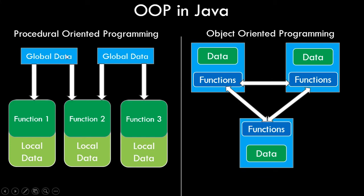In the procedural part, we have global data accessible by functions 1, 2, and 3. Function 2 can access both global data 1 and 2. In the object oriented part, you can see the square blue boxes — each box has its own data and functions. Communication happens via the functions, as shown by the arrows. This represents that data for each class is only accessible via its own functions; no outside function can directly access the data. To access the data, it must go through that class's function — that's where the added layer of security comes in.